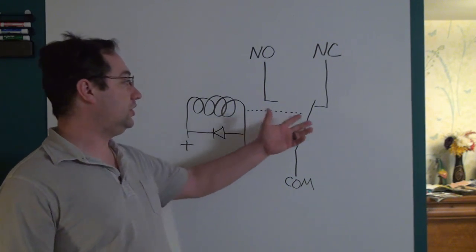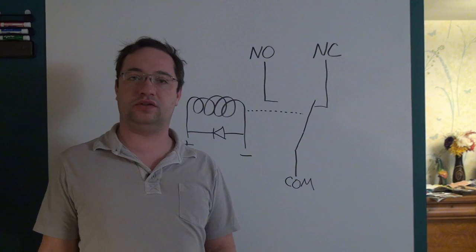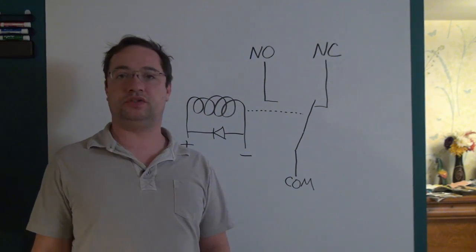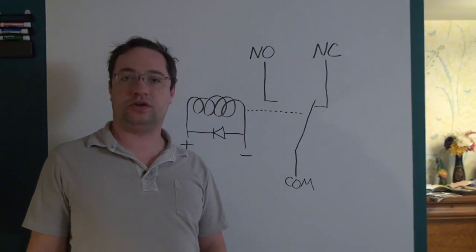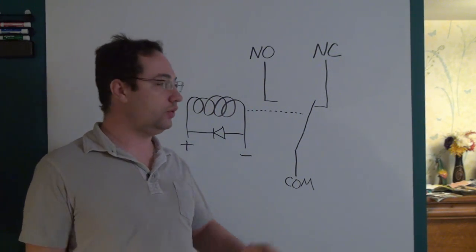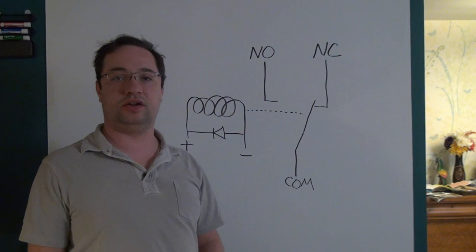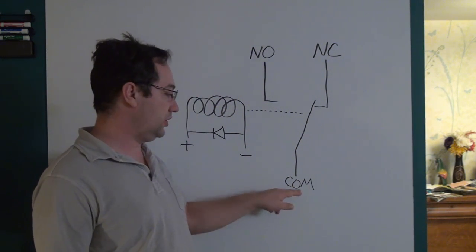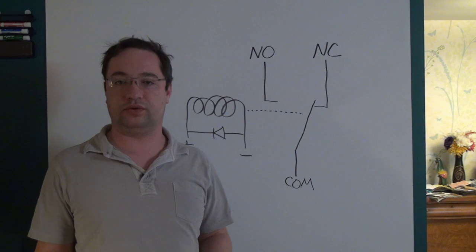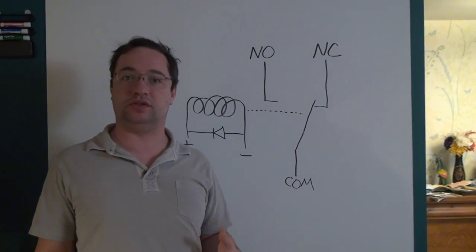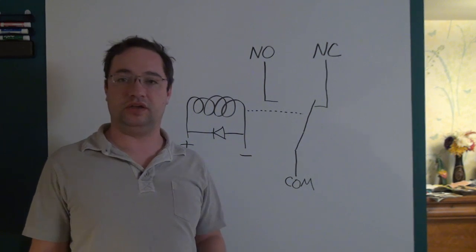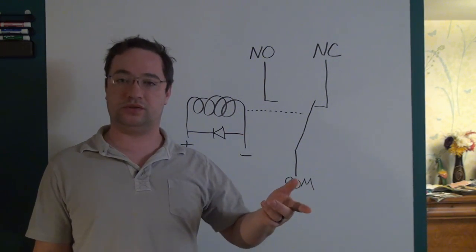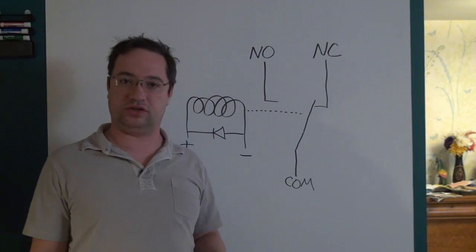Moving on to the hot side of a relay, it probably has the greatest amount of ratings and they are the most misunderstood. The first rating is a voltage rating, which refers to how much voltage the hot side can tolerate between, say, the normally open and common terminal without getting arc over. The rating is sometimes given in AC, sometimes in DC — and remember that an AC rating will be given in RMS, but the peak voltage is actually higher than that.